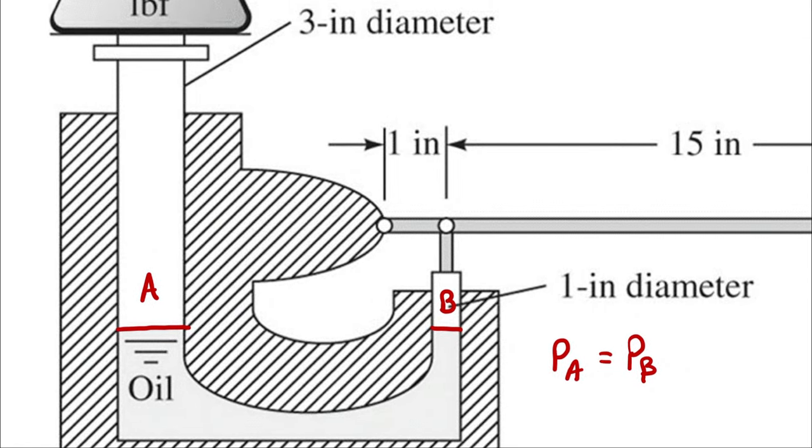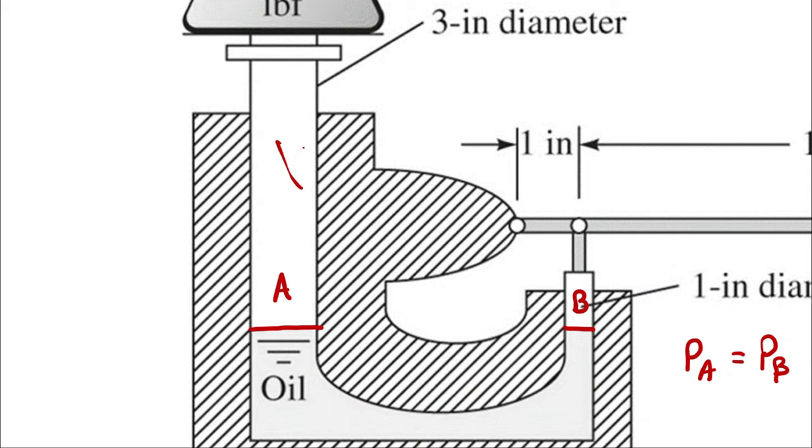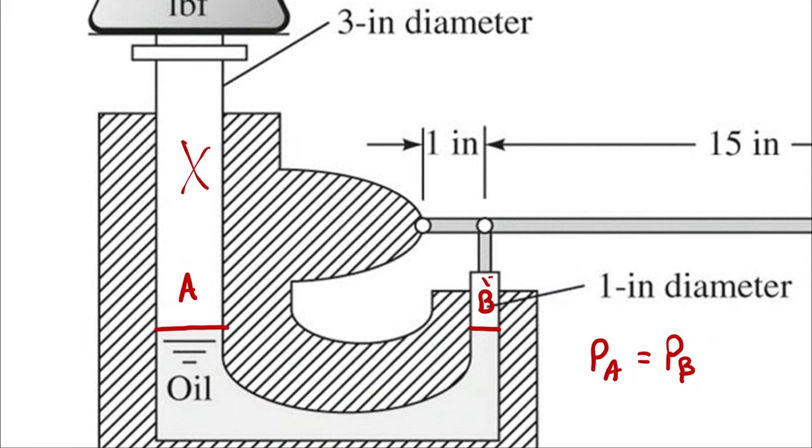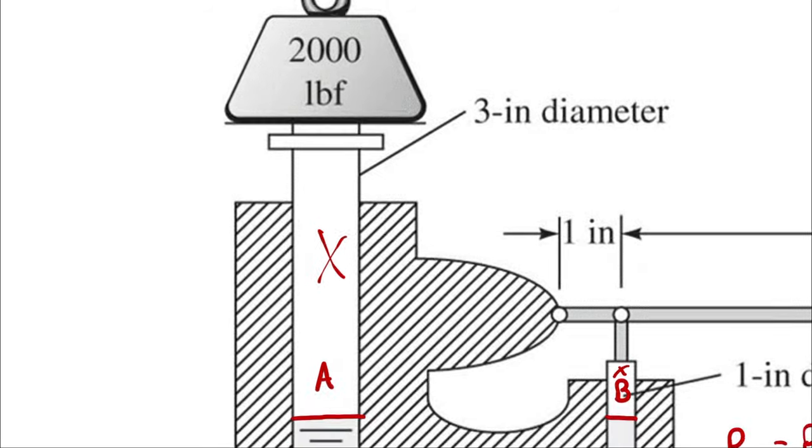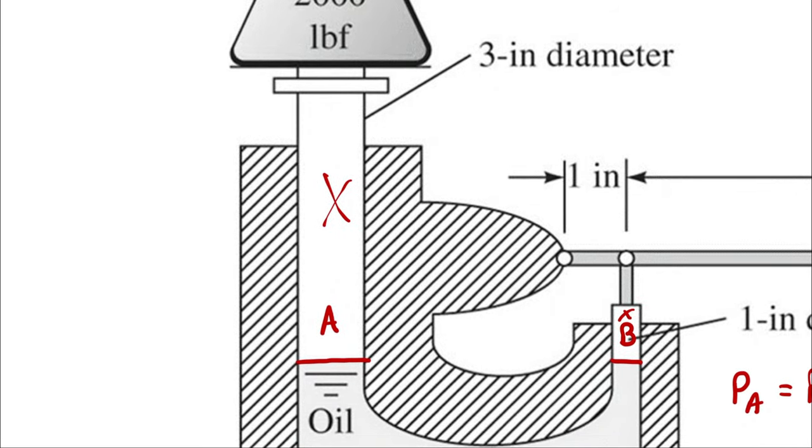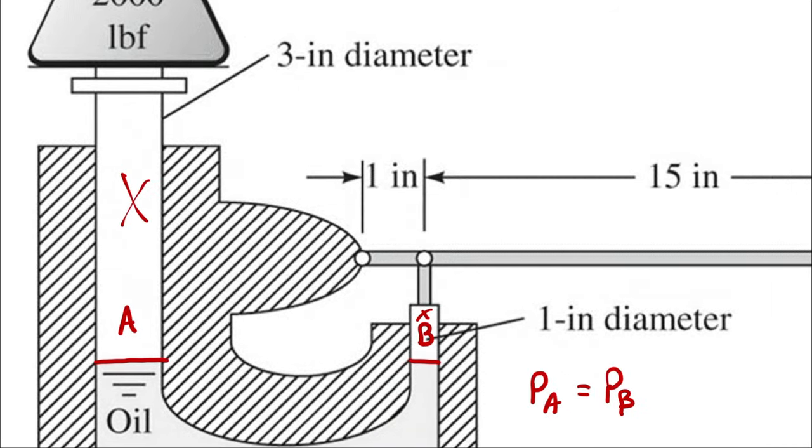Furthermore, these pistons, which are shown in white, are assumed to be weightless, which means that effectively the 2,000 pound weight is applied directly at point A and the force exerted by this lever is exerted at point B.